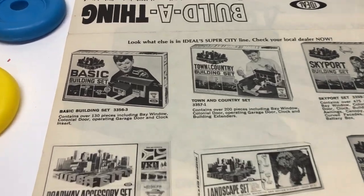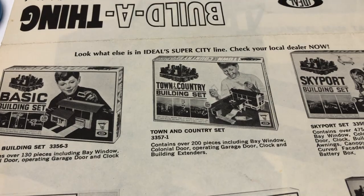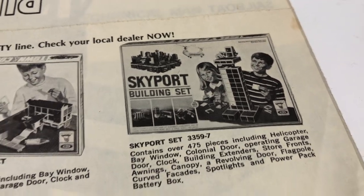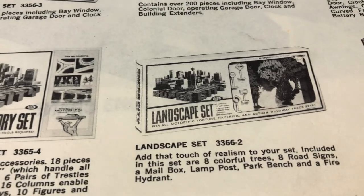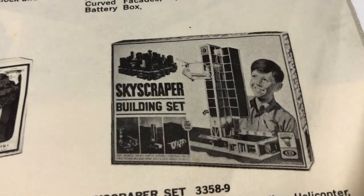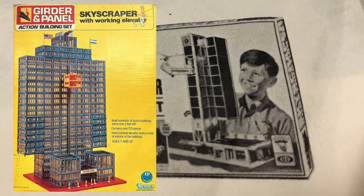The instructions show that there's a number of different sets. You could get a basic building set. Town and country. Skyport. The helicopter? That's pretty darn cool. There's a roadway set. Landscape set. And the one I would have wanted, the skyscraper set. Kind of like a girder and panel thing. I love girder and panel.